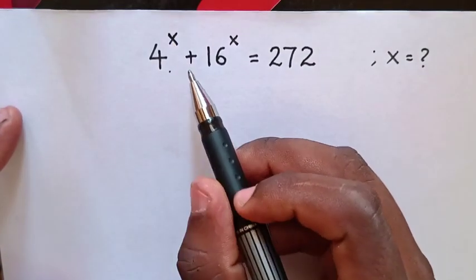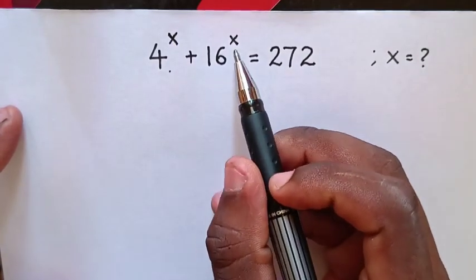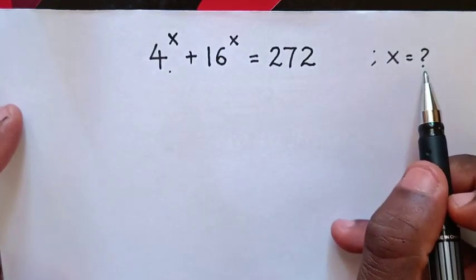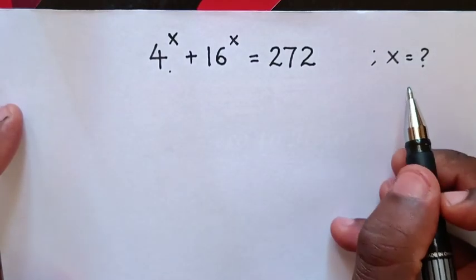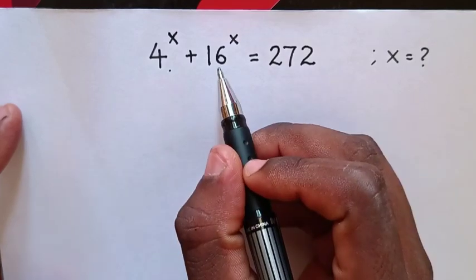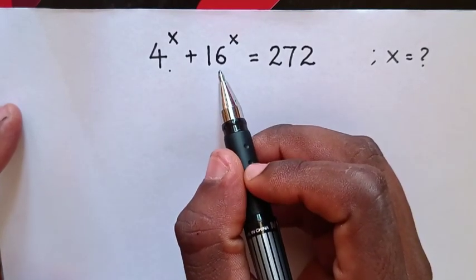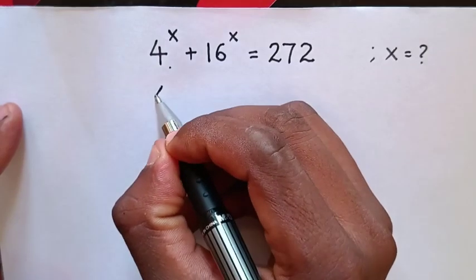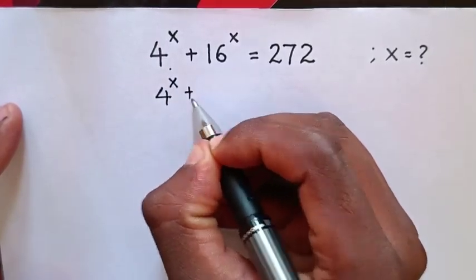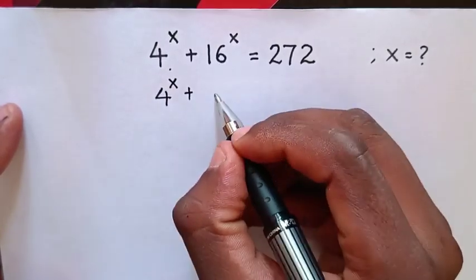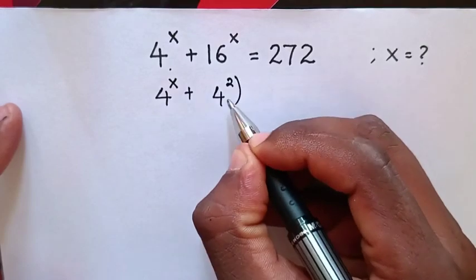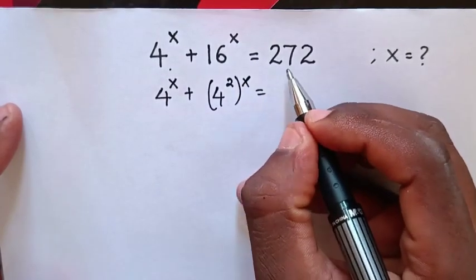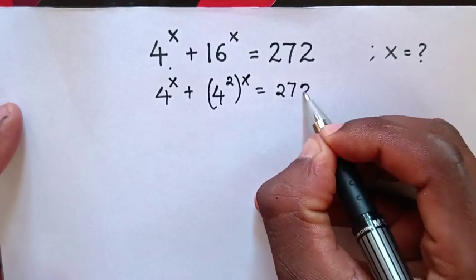How to solve 4 power x plus 16 power x equals 272, to find the value of x. So 4 and 16 are related — 16 is the same as 4 squared. So the equation becomes: 4 power x plus 4 squared, bracket power x, equals 272.